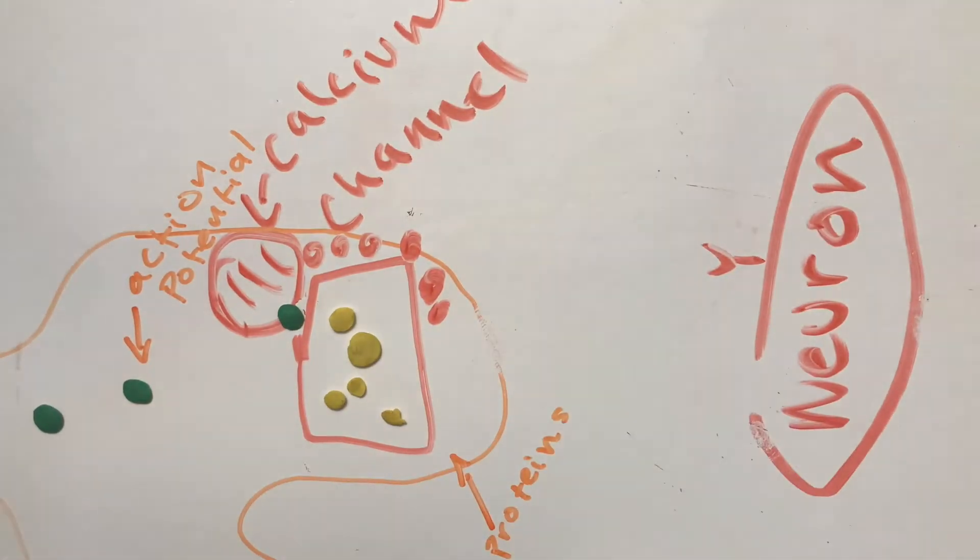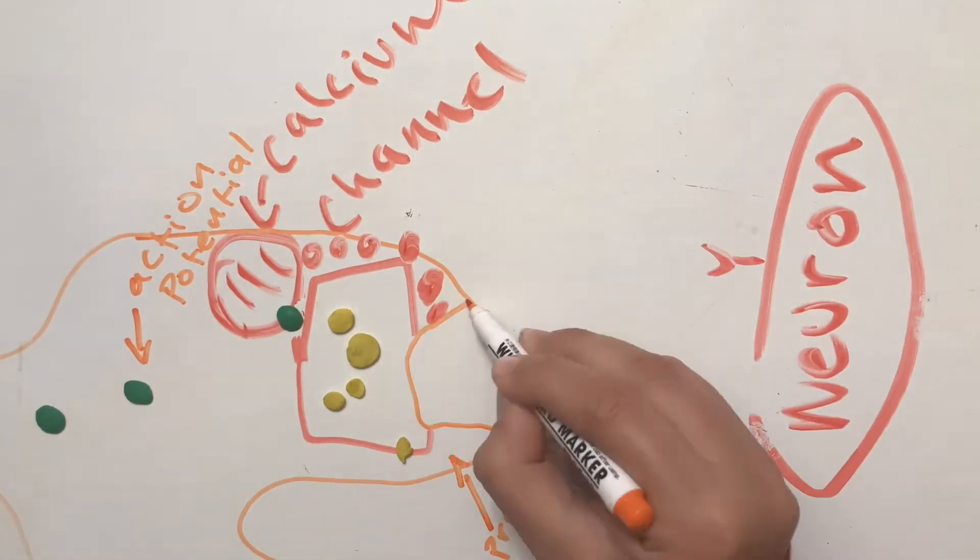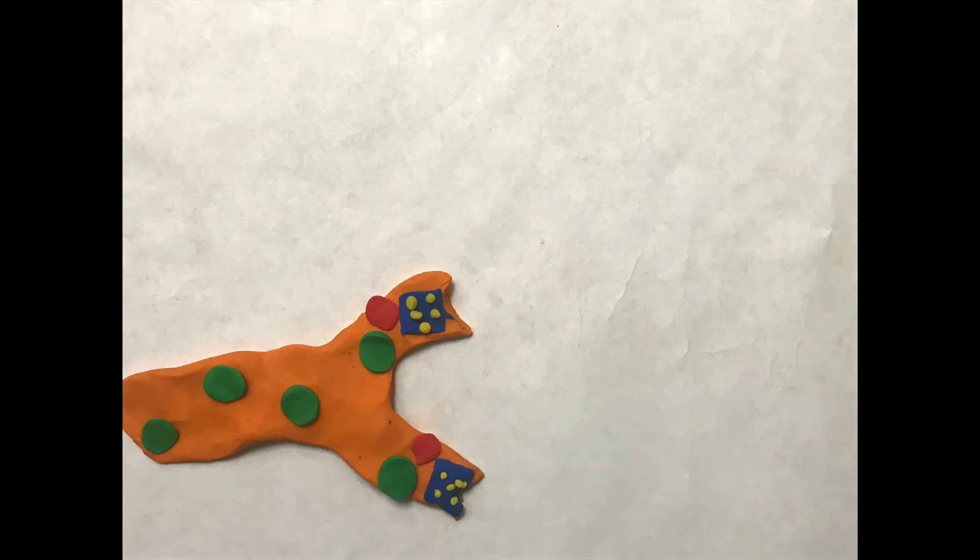By increasing the calcium in the axon terminals, the protein on the synaptic vesicles will fuse with the membrane.